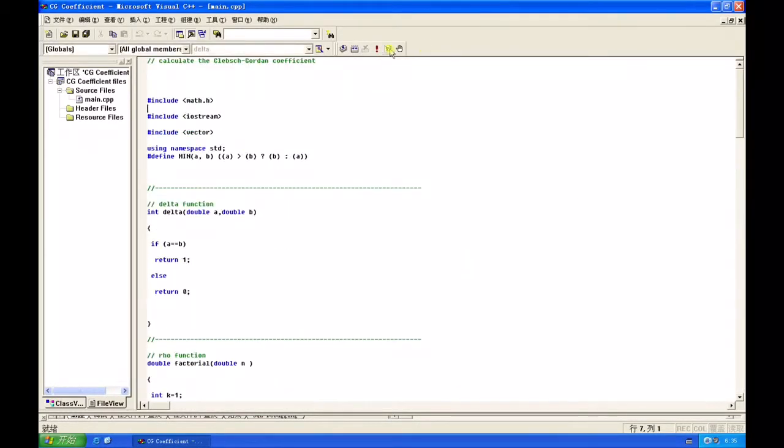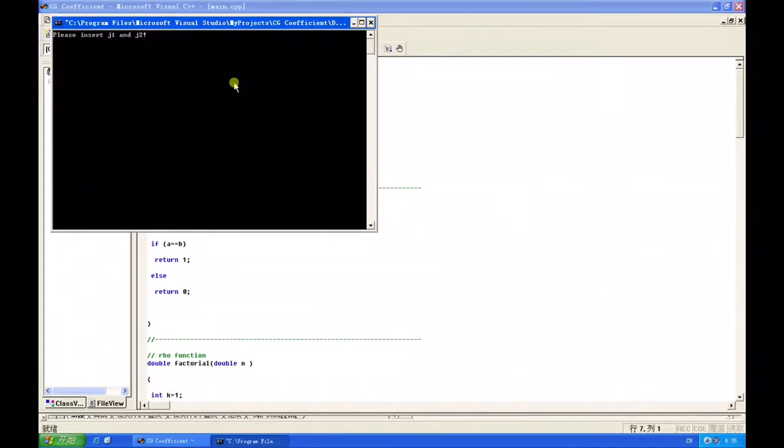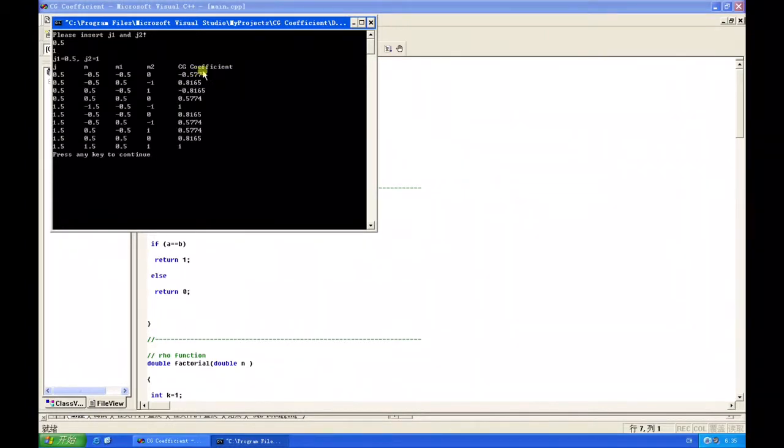Let's run the program. Let's say J1 equals 0.5, and J2 equals 1. We have a list of CG coefficient with respect to different J, M, M1, and M2.